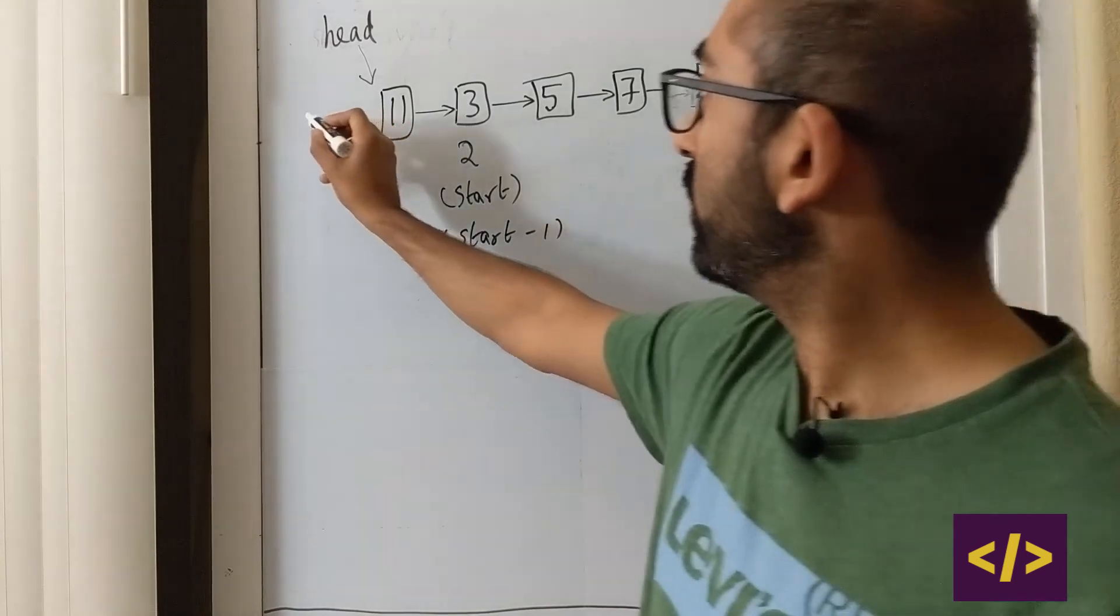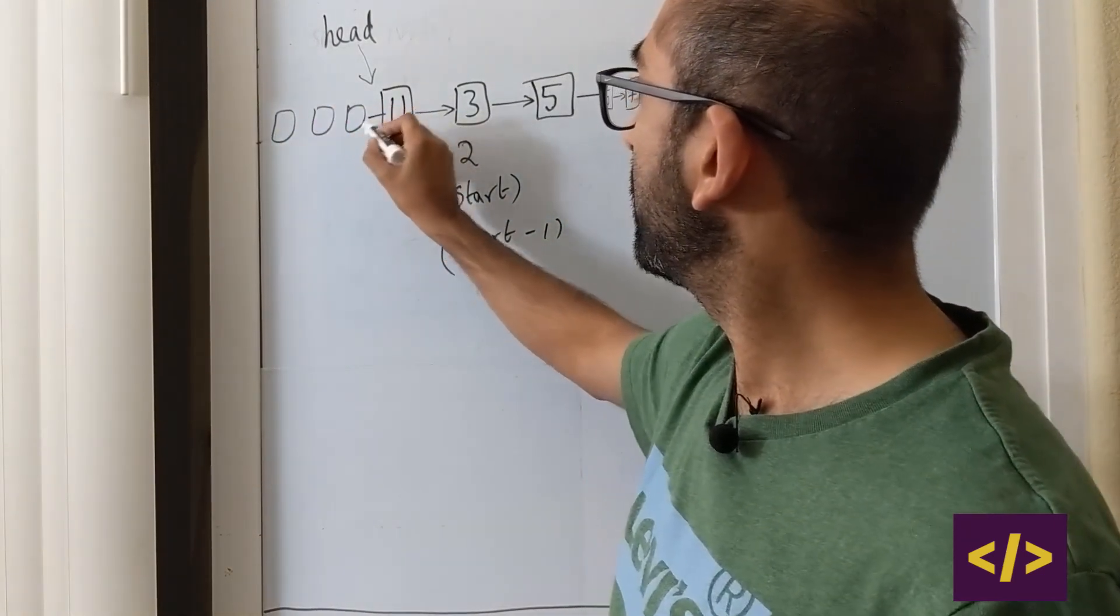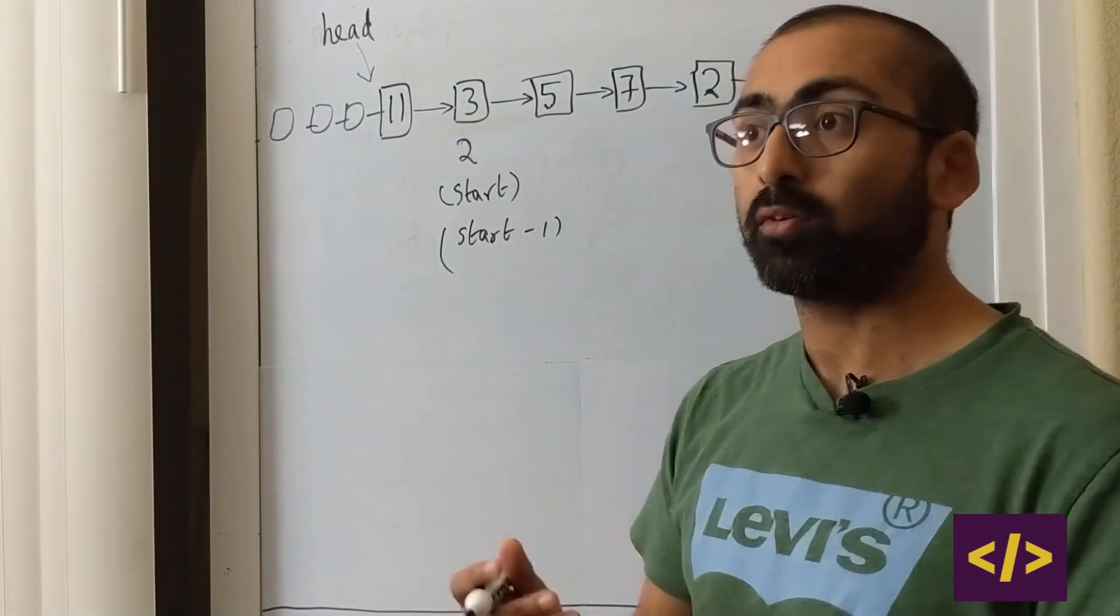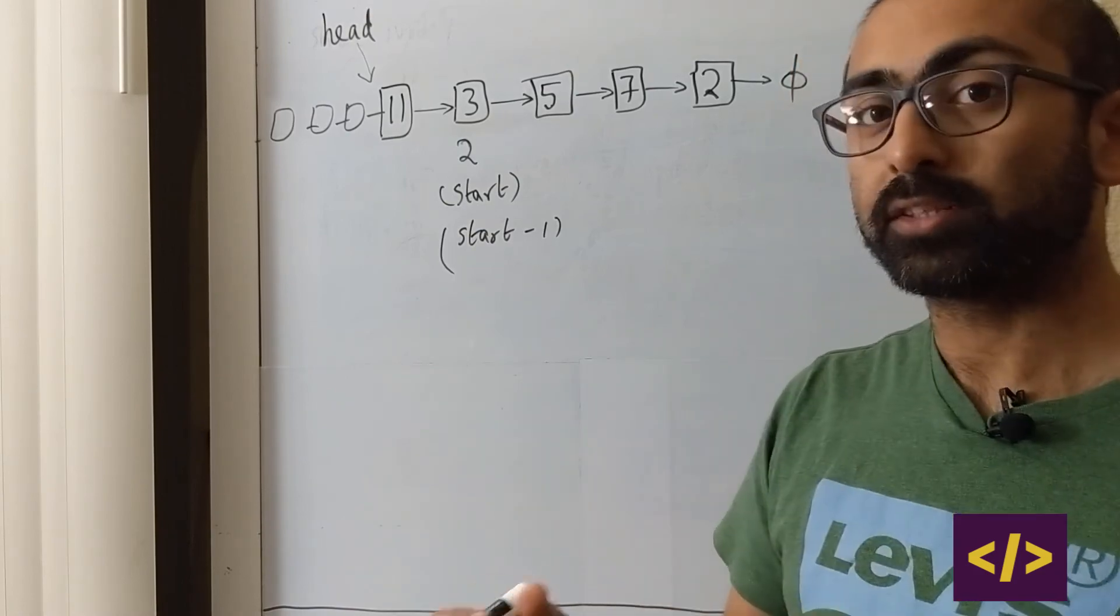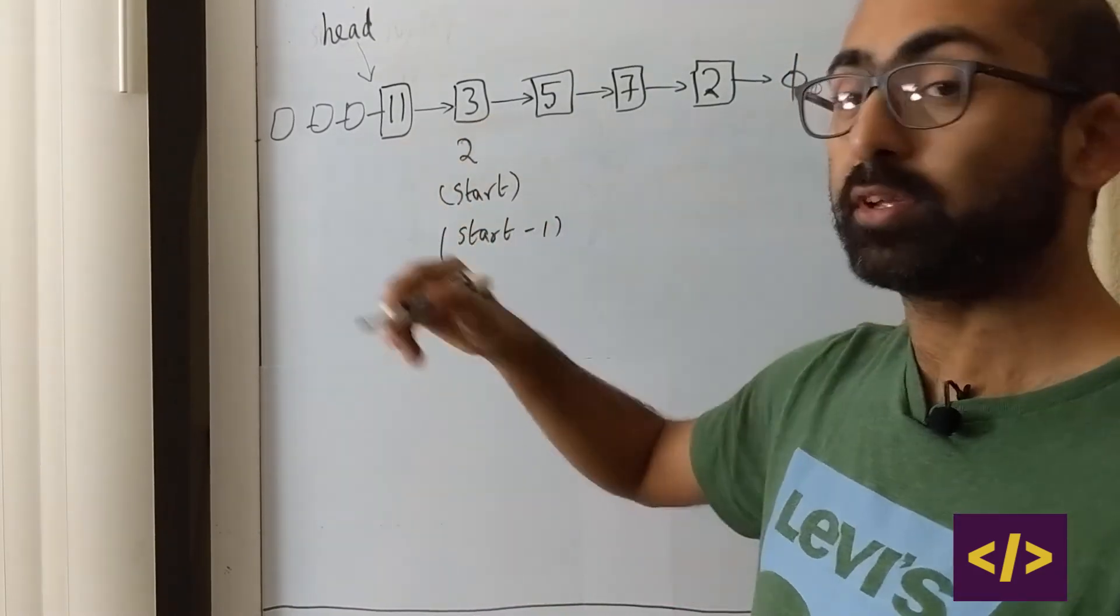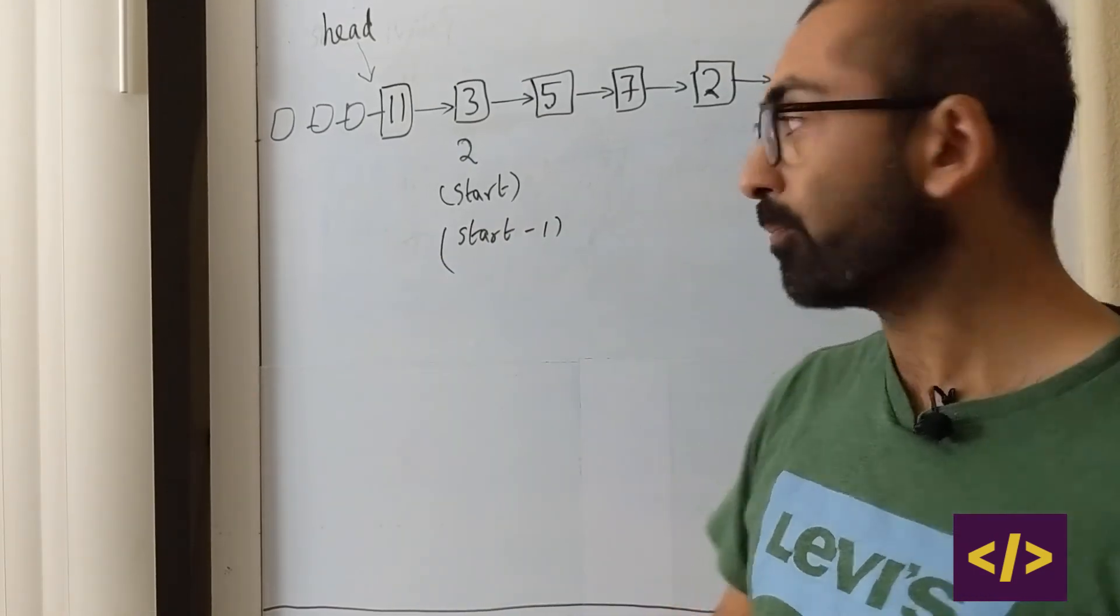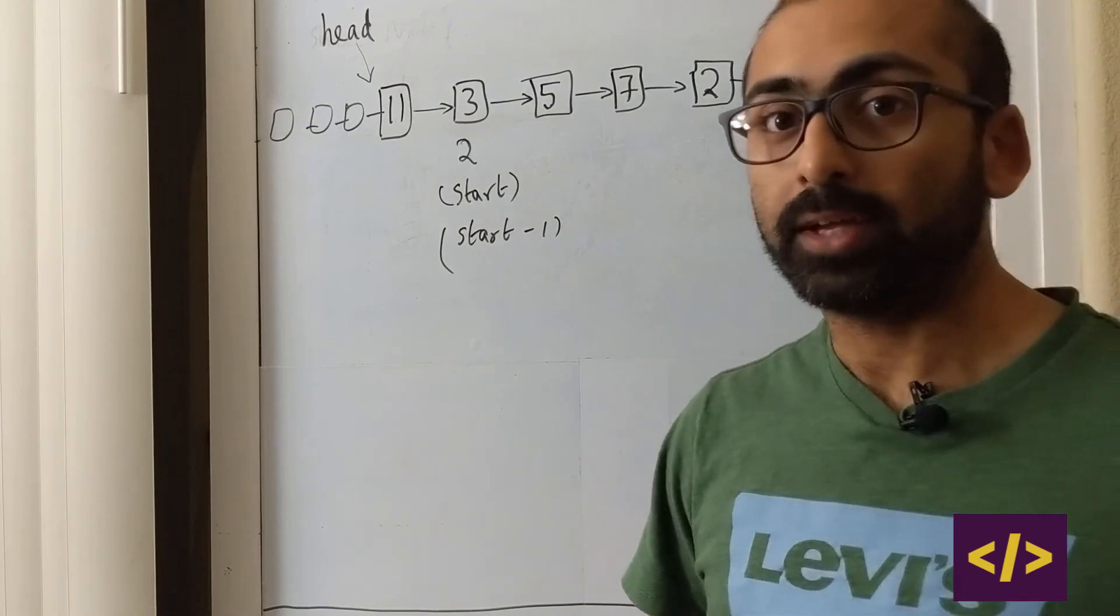And now let's assume that there was a lot of data behind this. So we traverse until we're always looking for next. Have you reached the start? So we're always going to go to start minus 1. And that start minus 1, we're going to call it the head.